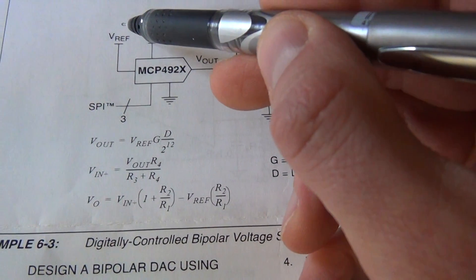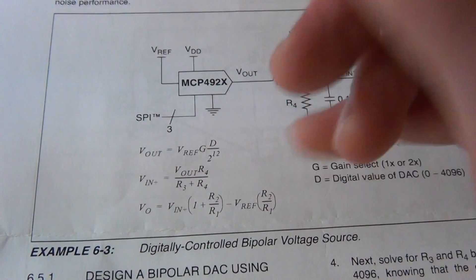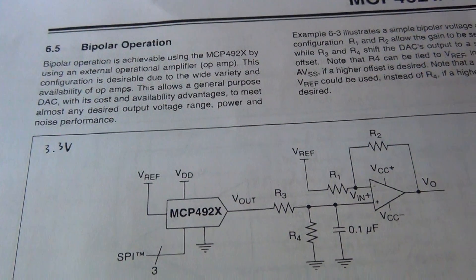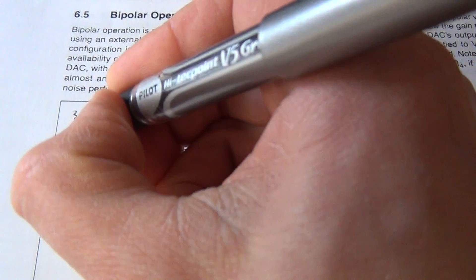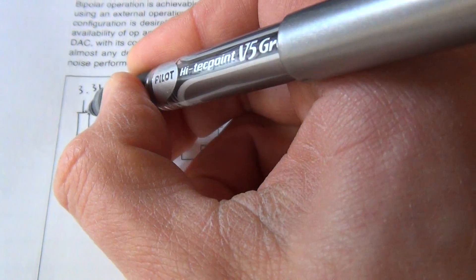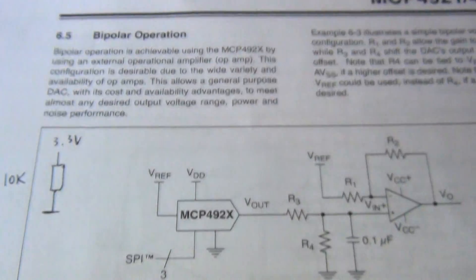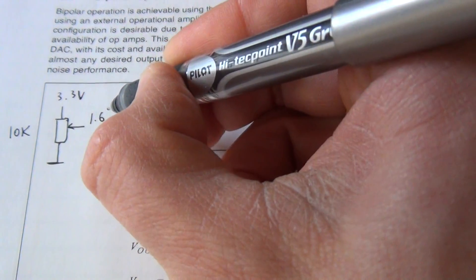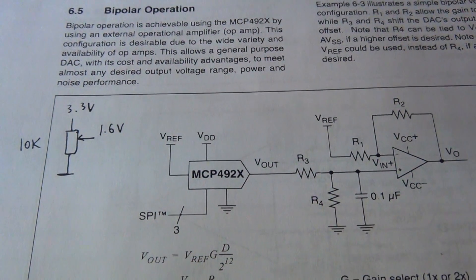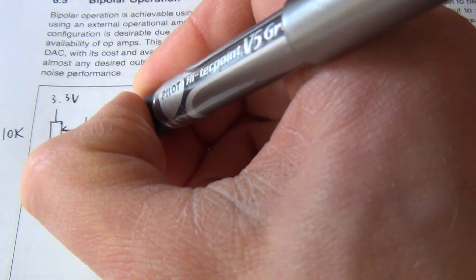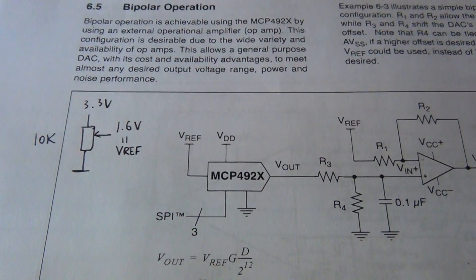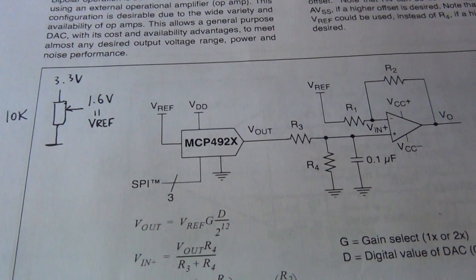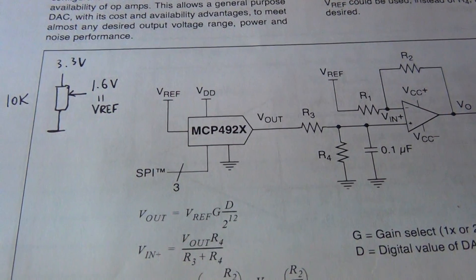So we would need the reference voltage and the easiest way for that is to take the 3.3V output of Adafruit Hazza and create a voltage divider. We would take a 10K potentiometer and then get 1.6V output of it, and that will be our Vref. It doesn't have to be a strong signal because we will be buffering it inside the MCP4922.